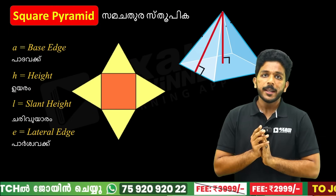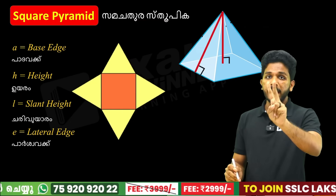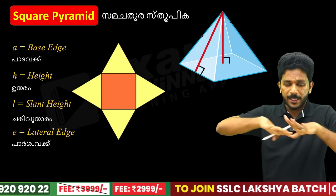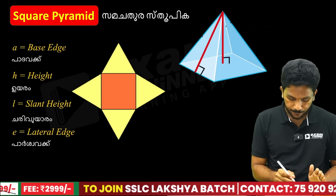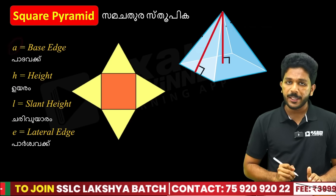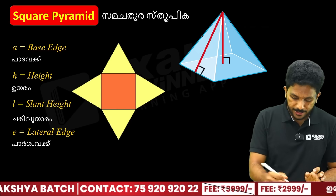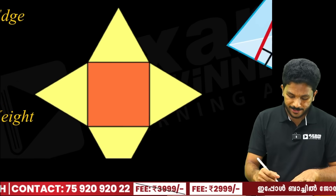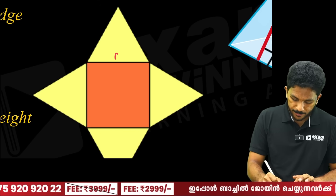So, the first shape is the square pyramid. You can draw the diagram. We have to label the parts. If you look at the base edge, the base edge is A. The base is square — so all four sides are A.